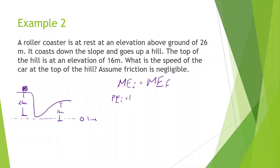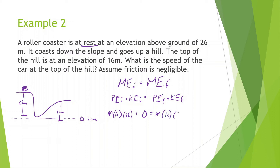Potential energy initial plus kinetic energy initial equals potential energy final plus kinetic energy final. At the very beginning there's potential energy: mass M times gravity 10 times height 26. It starts at rest, so kinetic energy initial is zero. There is potential energy at the end because we set the zero line at the bottom: mass times gravity 10 times height 16, plus one-half M V squared. The mass cancels out because it appears in every term.